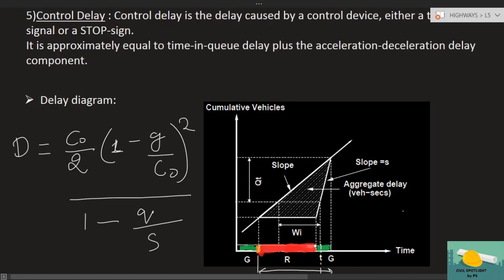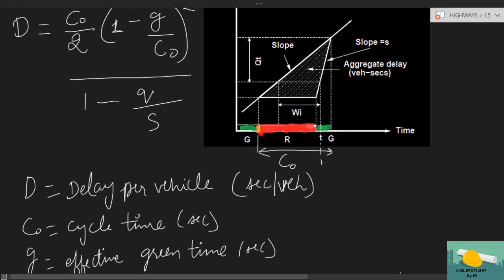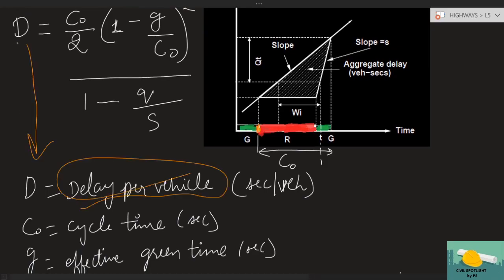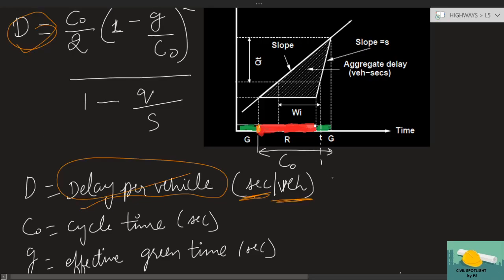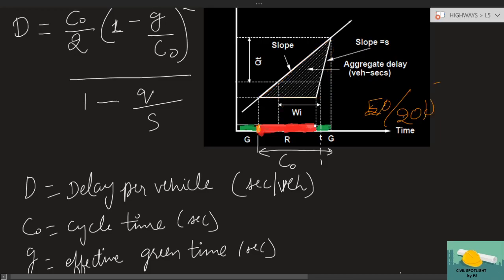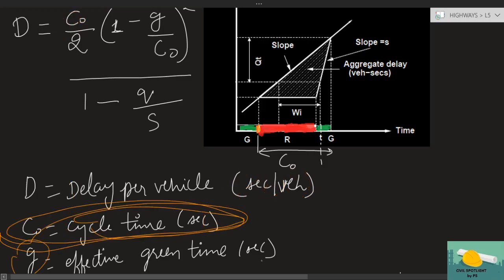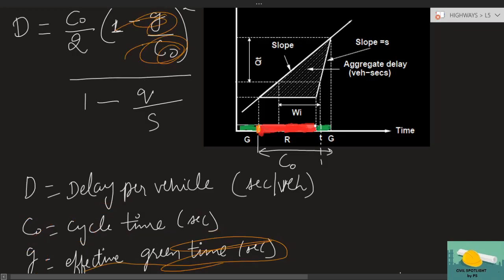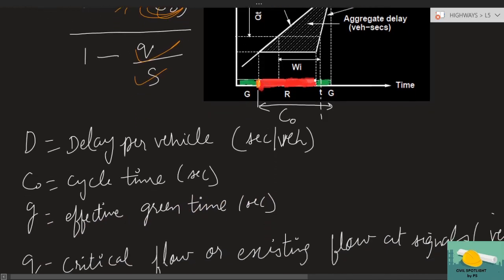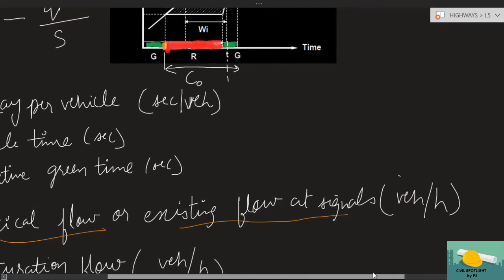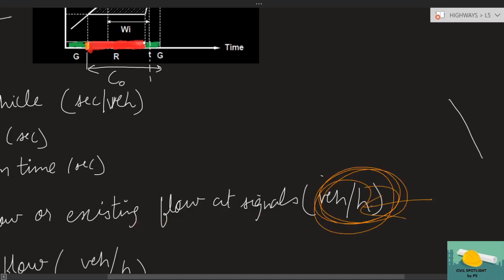Capital D is delay per vehicle — it will appear in the formula and is measured in seconds per vehicle, i.e., how many seconds of delay each vehicle experiences. For example, if 200 vehicles experienced delay over 50 seconds, it would be 1/4 second distributed per vehicle — that is why the unit is seconds per vehicle. C-naught is the cycle time — the optimum cycle length derived from Webster's method, in seconds. G is the effective green time, also in seconds. C-naught again is the optimum cycle length. Q is the critical flow and S is the saturation flow, both in vehicles per hour.